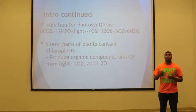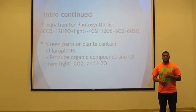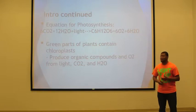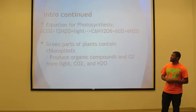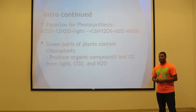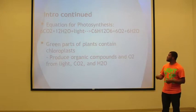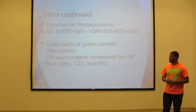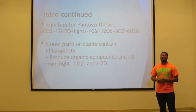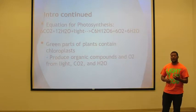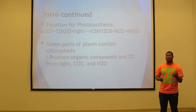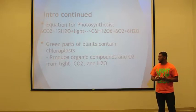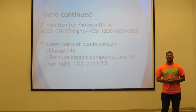There is actually an equation that scientists have found for the process of photosynthesis. It involves carbon dioxide, water, and light reacting together to produce sugar, oxygen, and water again. The green parts of plants contain chloroplasts, and from these chloroplasts organic compounds are produced from light, CO2, and H2O.